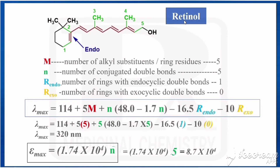The next example is retinol. M includes 2 ring residues and alkyl substituents, giving M = 5. The number of conjugated double bonds n = 5. R_endo = 1, as there is one ring with an endocyclic double bond. R_exo = 0, as the ring does not have an exocyclic double bond.